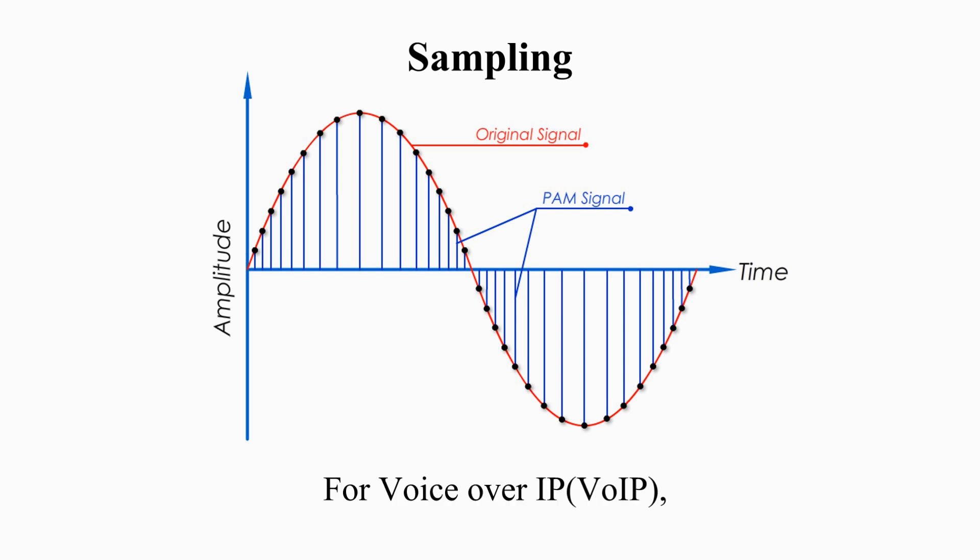For voice over IP, the sample rate is double, which is 16 kHz. For audio CD or mp3, sample rate is about 44 kHz, or 44,000 samples per second.